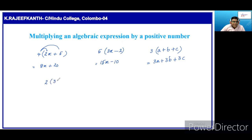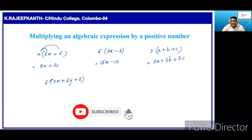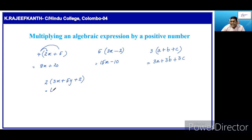Here one more example: 2 into 3x plus 5y plus 2. Here also, there are three terms. So, we have to multiply each term by 2. Then, 3x into 2 is 6x. Plus, 5y into 2 is 10y. Plus, 2 into 2 is 4. So, we should multiply each term of this expression by 2.